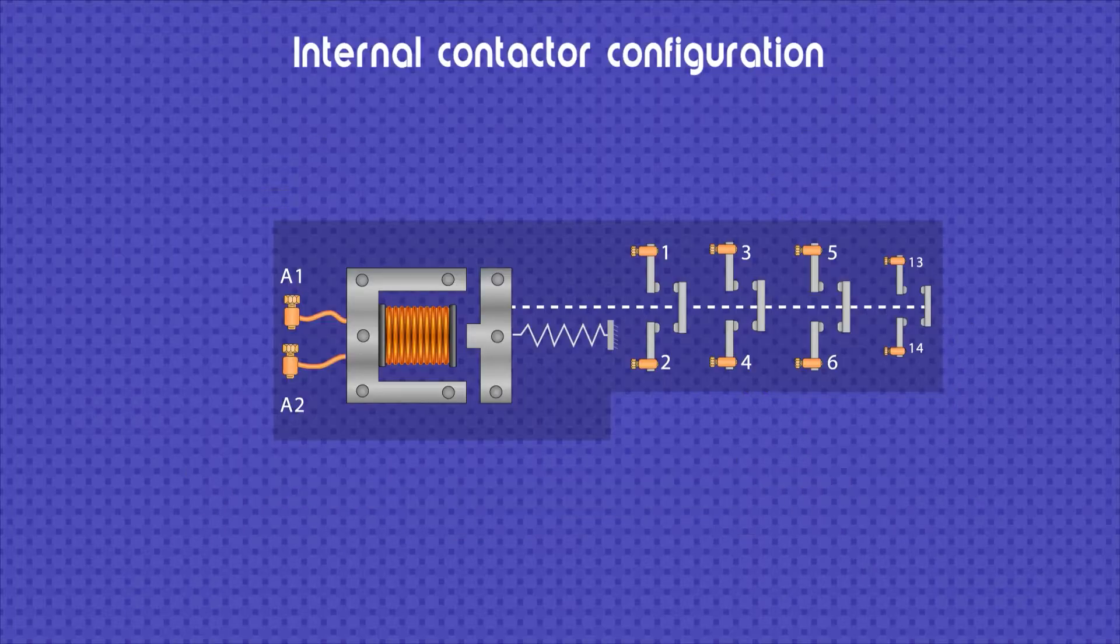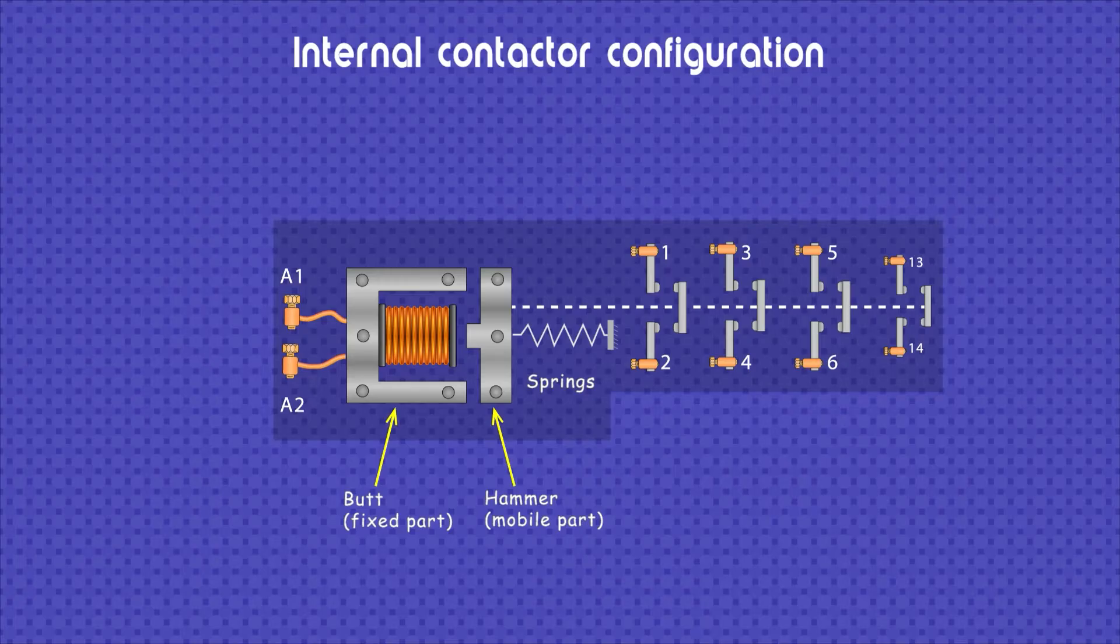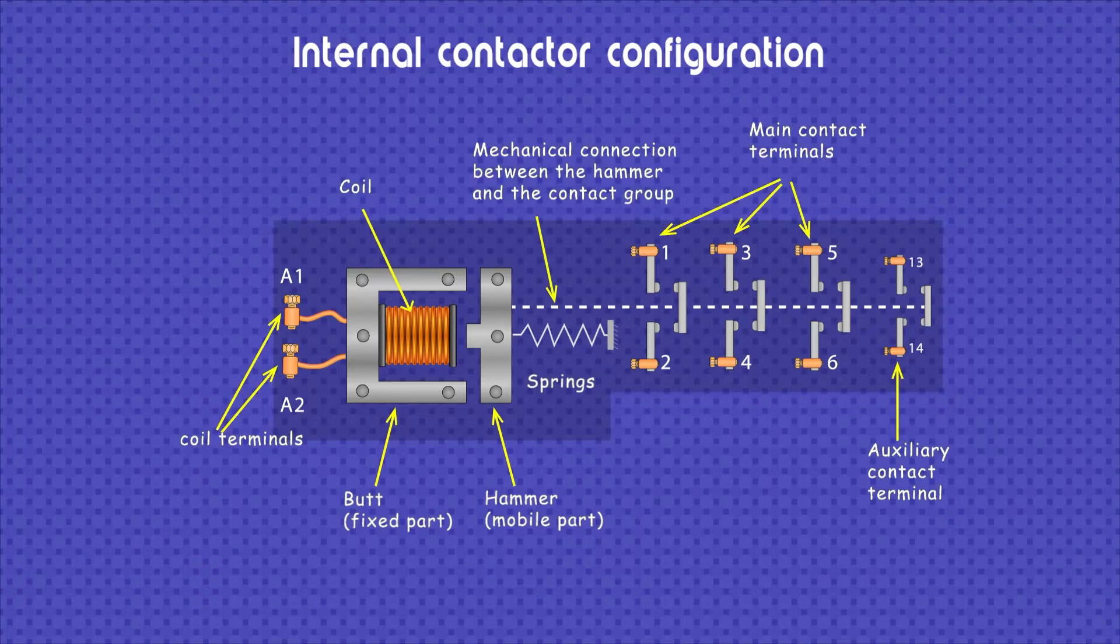Let's now look at the parts and internal configuration of an electromechanical contactor. The cylinder head, which is the fixed part, and the hammer, which is the moving part. These two elements make up the structure of the magnetic circuit when they come together. We also have the coil, which is a coil of wire that, when energized, generates a magnetic field around it along with the magnetic structure described above.